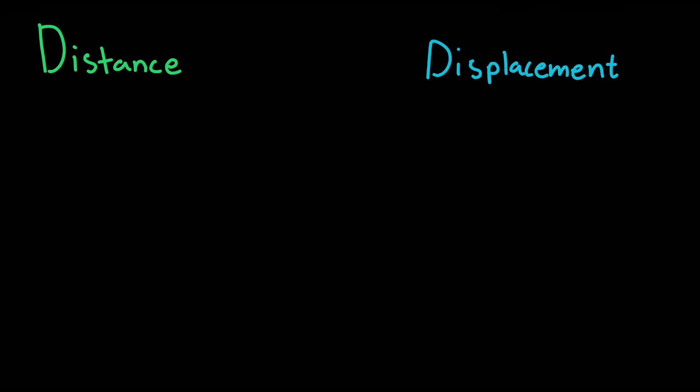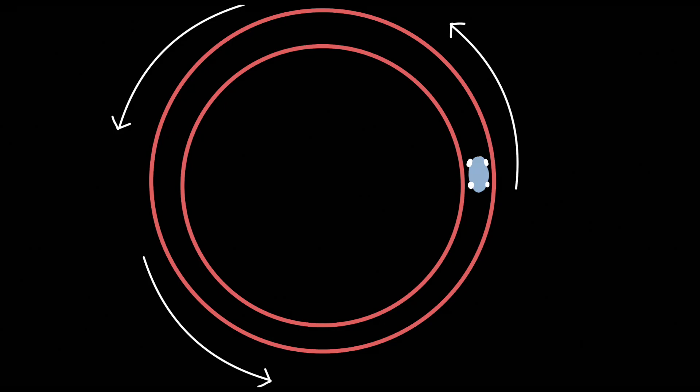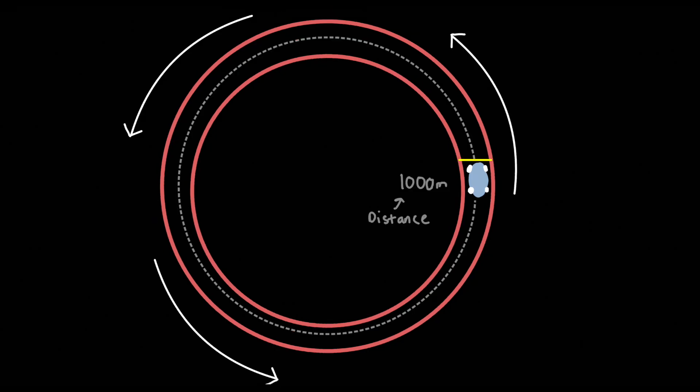To start, we need to define distance and displacement. Distance accounts for the total path an object takes, while displacement is the change in position. Displacement is denoted as delta x or delta s — delta means change in. The SI units for displacement are meters. For example, if a car drives around a circular road once with a distance of 1000 meters, the total displacement would be zero, since the car returns to the same position it left from.